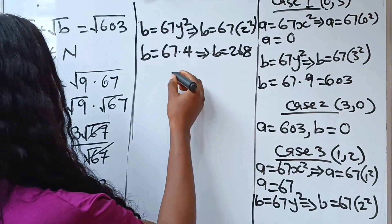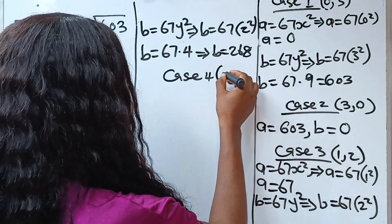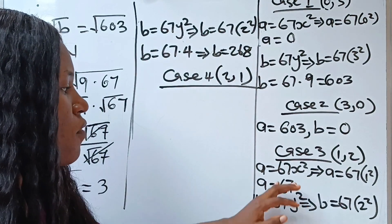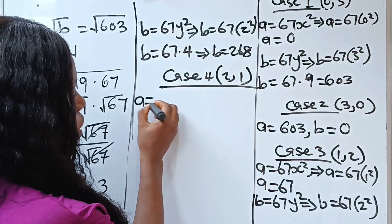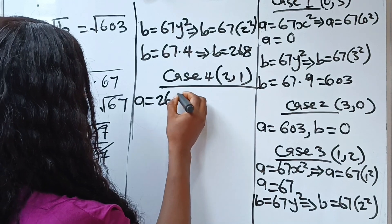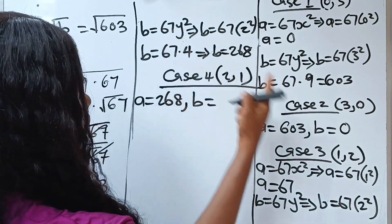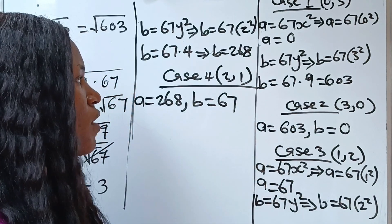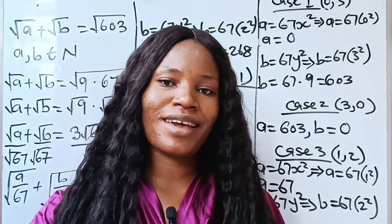For Case 4, x=2 and y=1, which interchanges the values from Case 3: a=268 and b=67. So the four solution pairs (a, b) are: (0, 603), (603, 0), (67, 268), and (268, 67). Thank you for watching and have a lovely day.